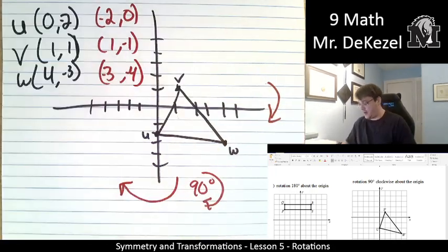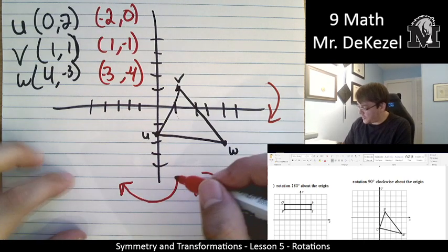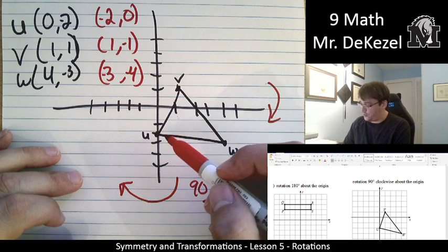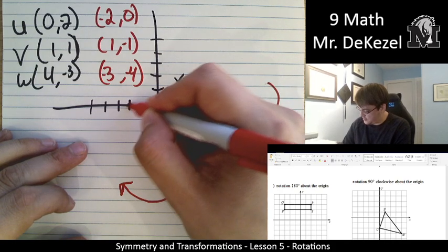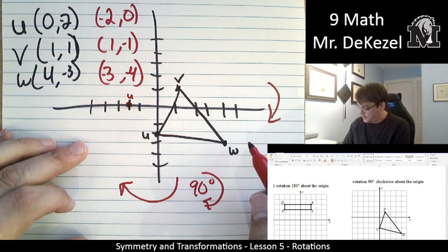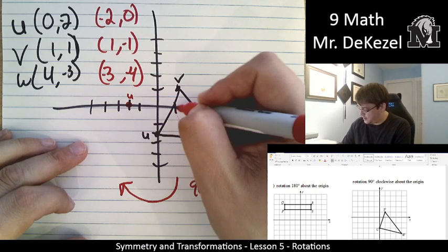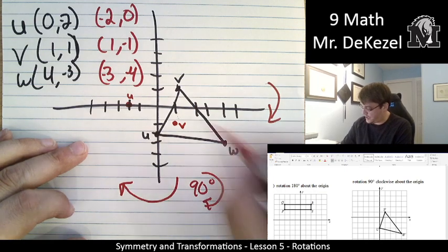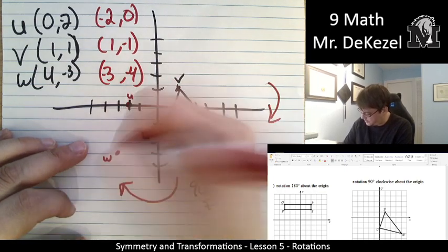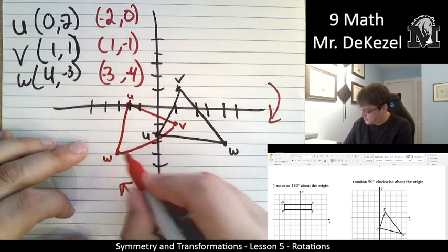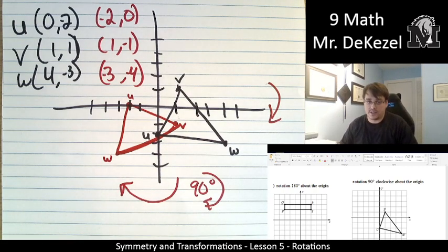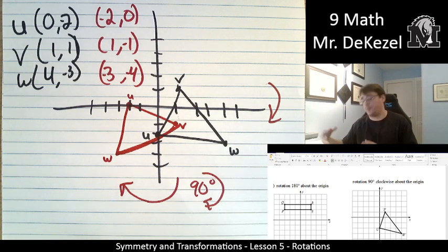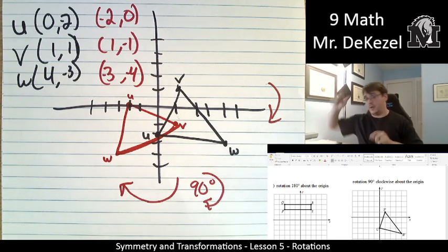So we have U, which is minus 2, 0, that's right here. V is at 1 minus 1 right here. And W at minus 3 minus 4 down here. We can connect those, and see that we have rotated our triangle 90 degrees. It's important if the points are in different quadrants that we put them into the quadrant that they're going to be in. It's rotating 90 degrees clockwise, we are putting them 1, 2, that way.